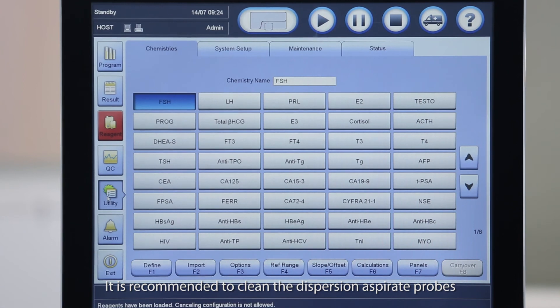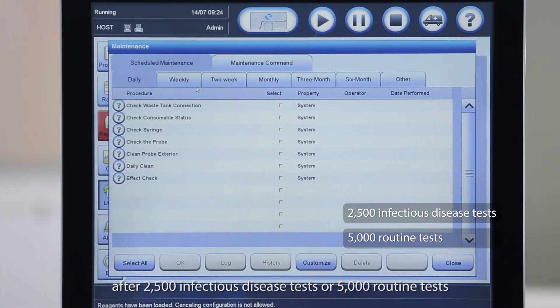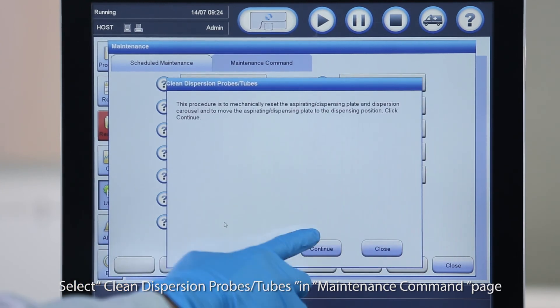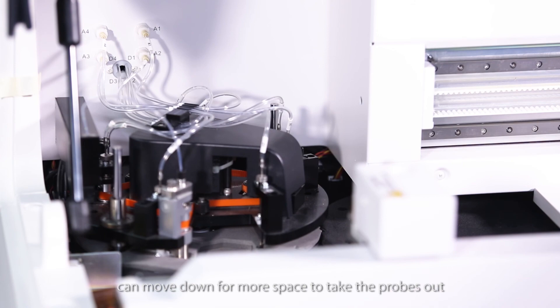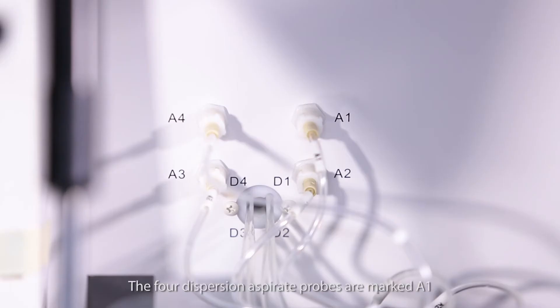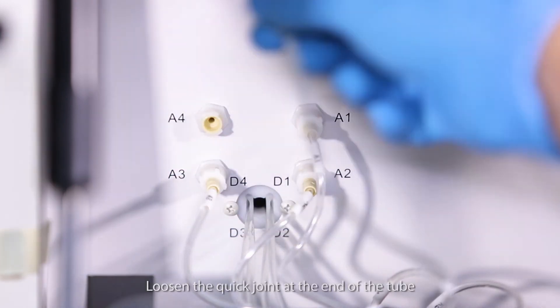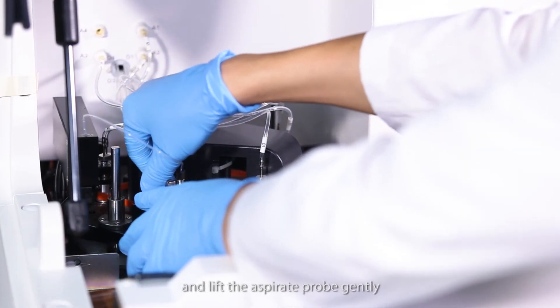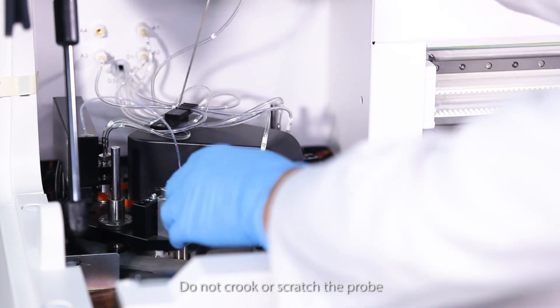It is recommended to clean the dispersion aspirate probes after 2,500 infectious disease tests or 5,000 routine tests. Select Clean Dispersion Probes in Maintenance command page. Click Continue so that the dispersion disk can move down for more space to take the probes out. The four dispersion aspirate probes are marked A1, A2, A3 and A4 respectively. Take A4 as an example. Loosen the quick joint at the end of the tube. Unscrew the round screw of A4 aspirate probe and lift the aspirate probe gently to remove it from the dispersion carousel. Do not crook or scratch the probe.